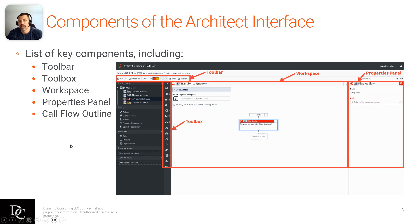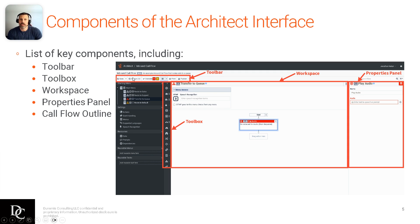Some good components of the Architect Interface to get familiar with: the toolbar, toolbox, workspace, property panels, and call flow outline. The toolbar is where you save, see the version, validate, and publish. You're also able to print it off if needed.